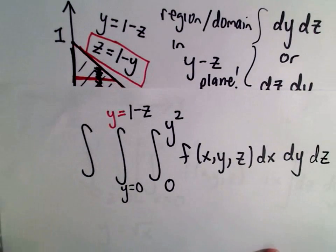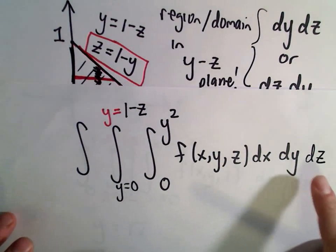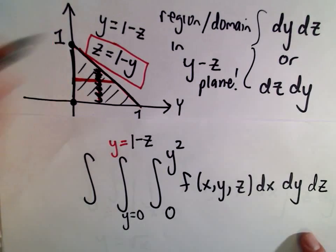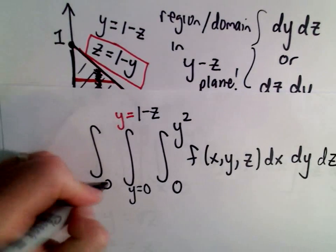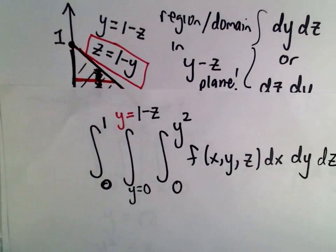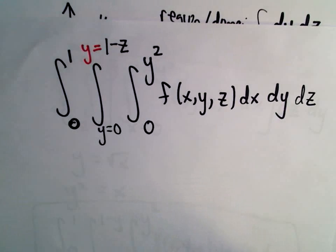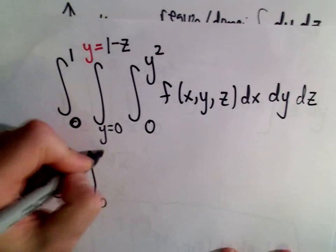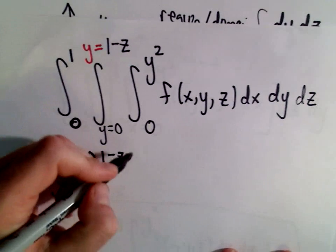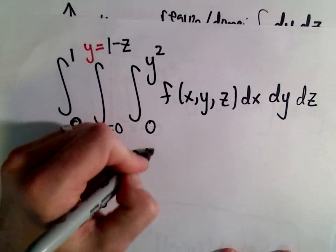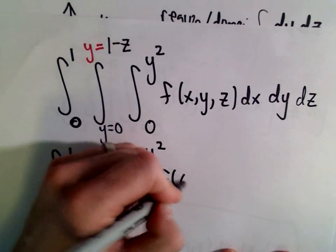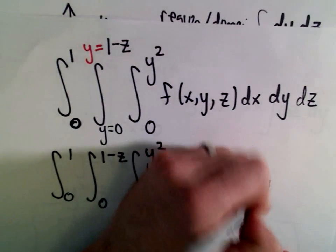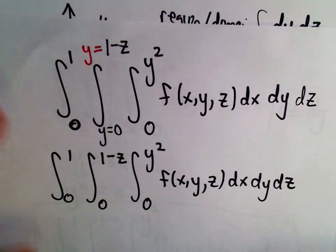Last but not least, we would integrate with respect to z. With respect to z, we're just doing the smallest z-coordinate to the largest z-coordinate. So we would be going from zero to one. So again, just to write it one more time, zero to one, zero to one minus z, and then from zero to y squared, doing dx, then dy, and then dz.